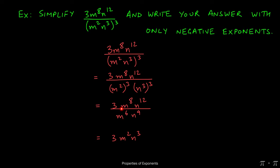When bases are same and we're dividing, we subtract exponents, top minus bottom. Top exponent is 8, bottom exponent is 6, which yields m squared.